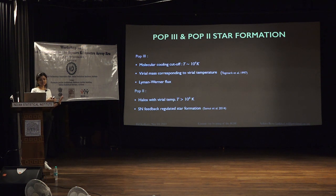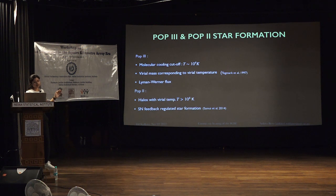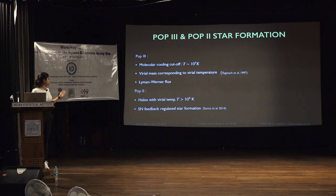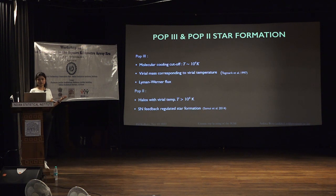Because of the presence of the Lyman-Werner flux, the minimum mass changes, which I will show in the next slide. For Pop 2 star formation, when the halos cross the virial temperature of 10 to the power 4 Kelvin, Pop 2 stars start to form. We have taken this supernova-regulated star formation model from Somerville et al. 2014.